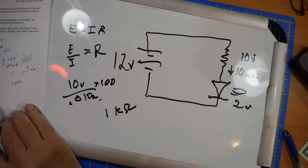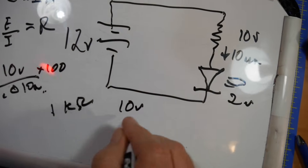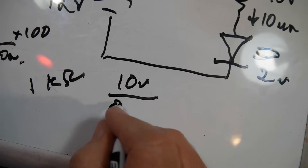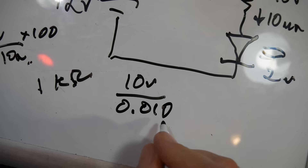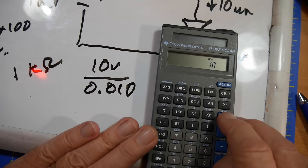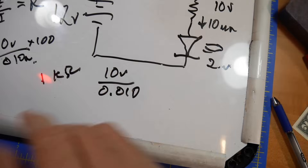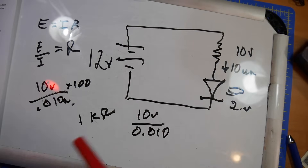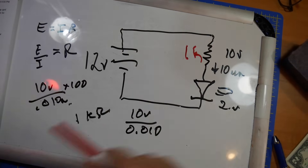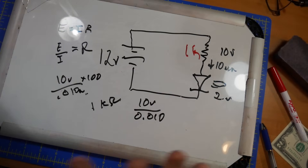Charlie thought the answer was 10 kilohms, so let's check: 10 volts divided by 0.010 amps — that's 10 milliamps. 10 divided by 0.01 equals 1,000, so the answer is 1 kilohm. He thought it came out to something different, but I do think I did it right.